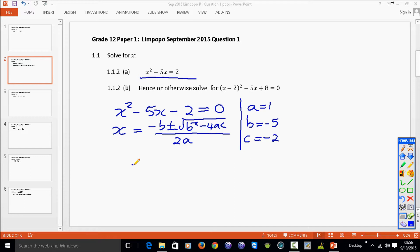So do the replacements properly and do it in brackets. Minus, minus, minus 5, plus or minus the square root of minus 5 squared, minus 4 times 1 times negative 2, everything divided by 2 times 1.